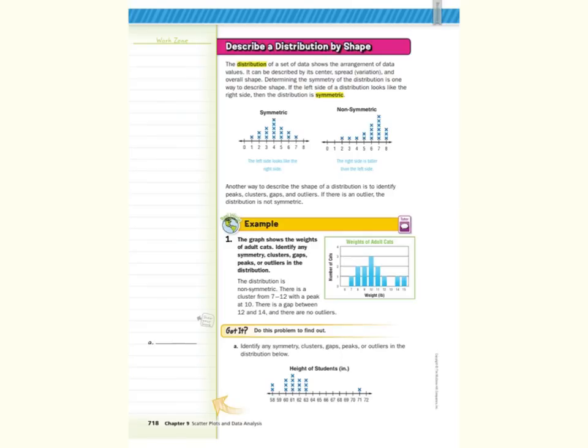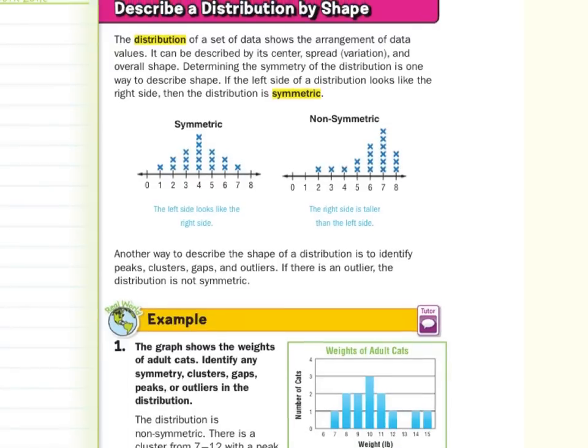Now, to describe a distribution by shape. The distribution of a set of data shows the arrangement of data values. It can be described by its center, its spread, which is the same thing as variation, and overall shape. Determining the symmetry of the distribution is one way to describe shape. If the left side of a distribution looks like the right side, then the distribution is symmetric. And here we have two comparing what symmetric and non-symmetric is. So our left side here looks like the right side of the distribution, so this is symmetric, versus the right side here being much taller than the left side, so this is non-symmetric.